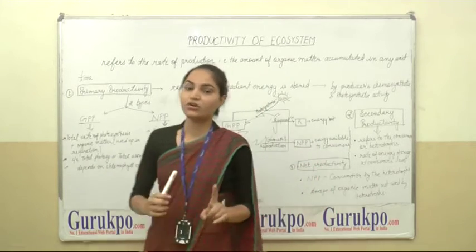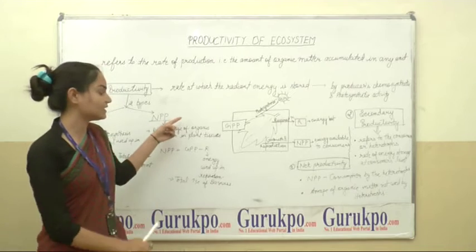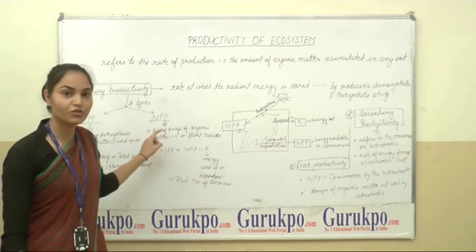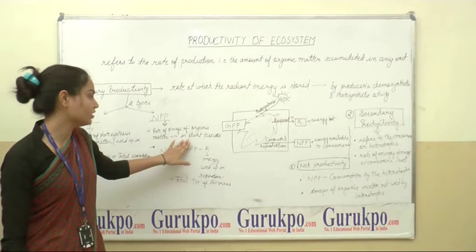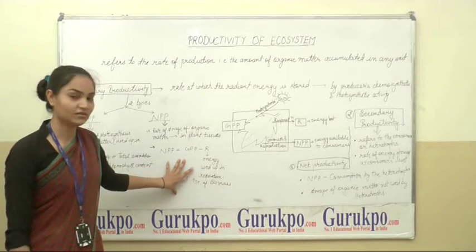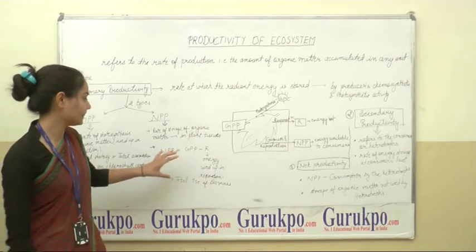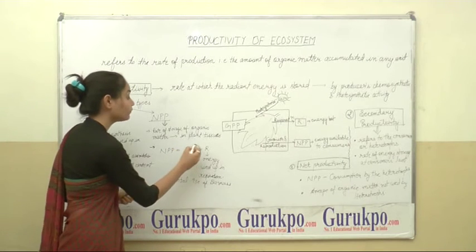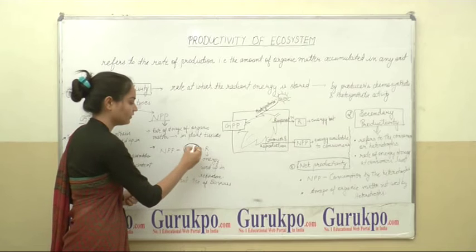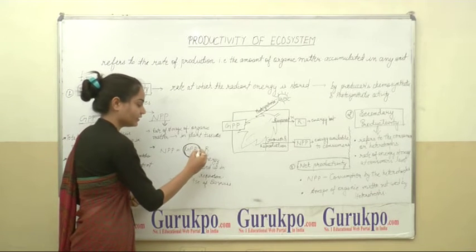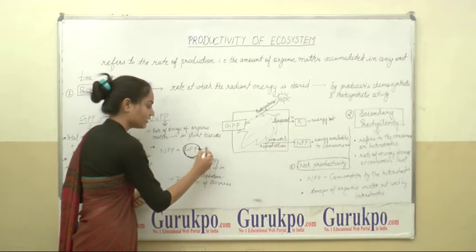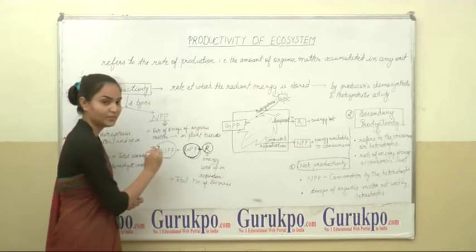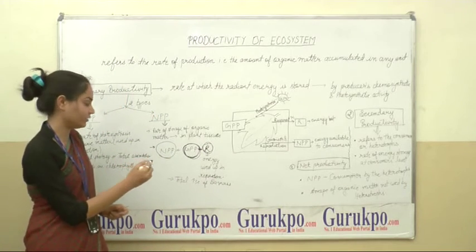The second type of primary productivity is NPP, the net primary productivity, which is the rate of storage of organic matter in plant tissue. We can understand this by this formula. GPP is the total productivity — the total photosynthesis of a plant or producer. When we subtract the respiration energy from this, we get the NPP, the net primary productivity.